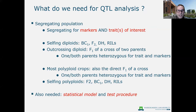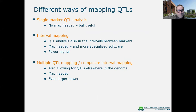The other thing we need is a statistical model or a test procedure. I will talk about different approaches to mapping QTLs, starting with the most obvious and simple one: single marker QTL analyses — for which you don't need a map, though it's still useful. Then I will move to interval mapping, where we do need a map, and finally I will talk about models with multiple QTLs.